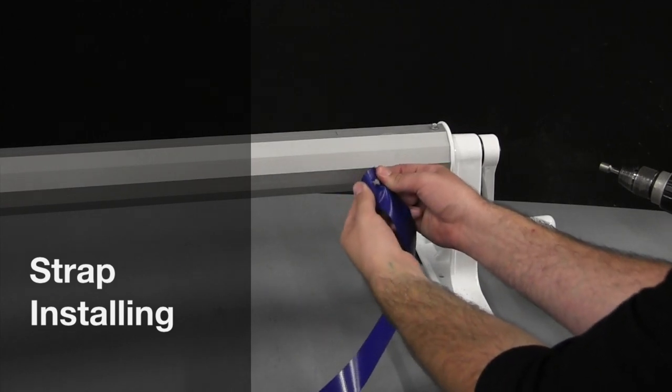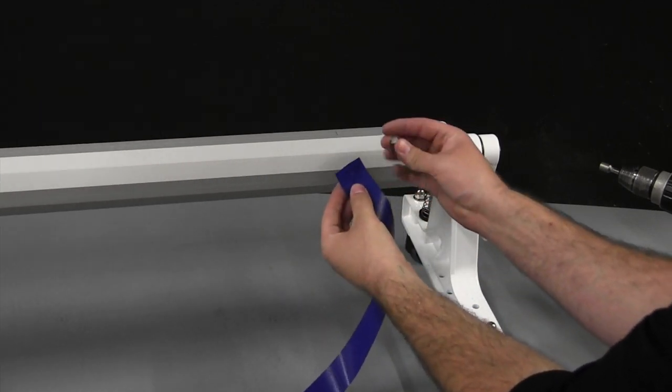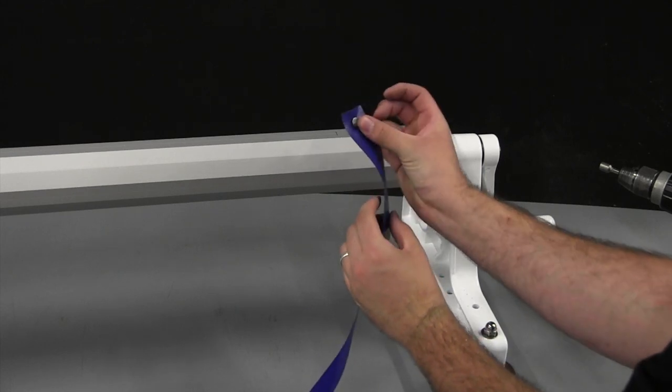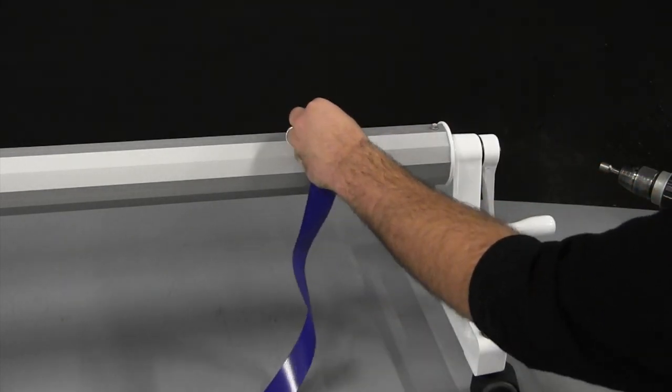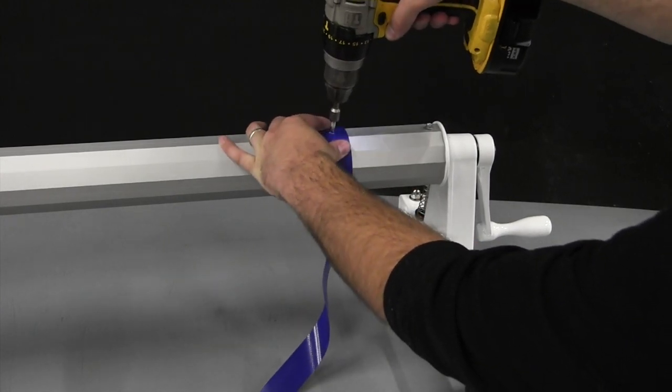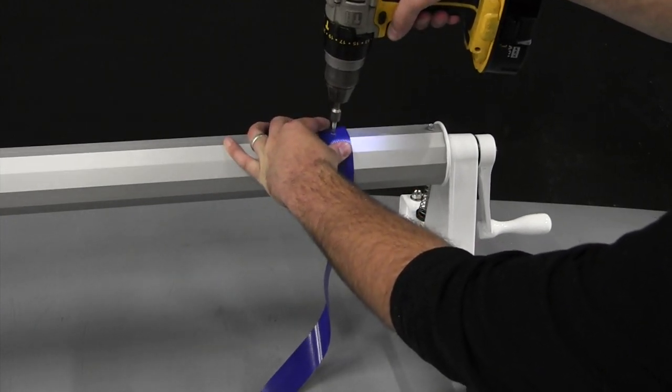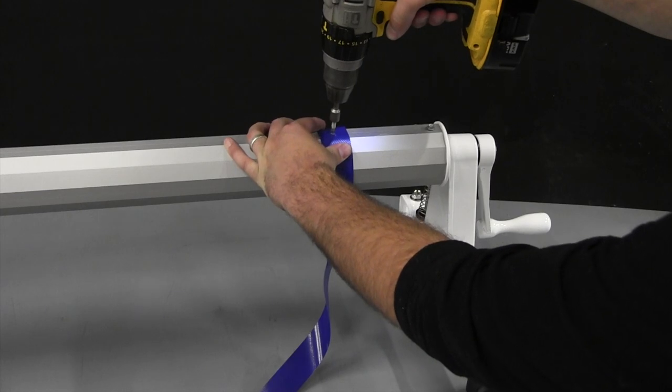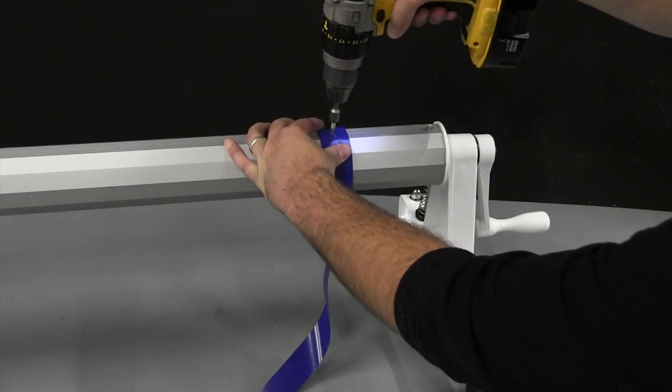Strap installing: Put a self-tapping screw through the cut in the strap, then attach it to the reel using the hex head driver.